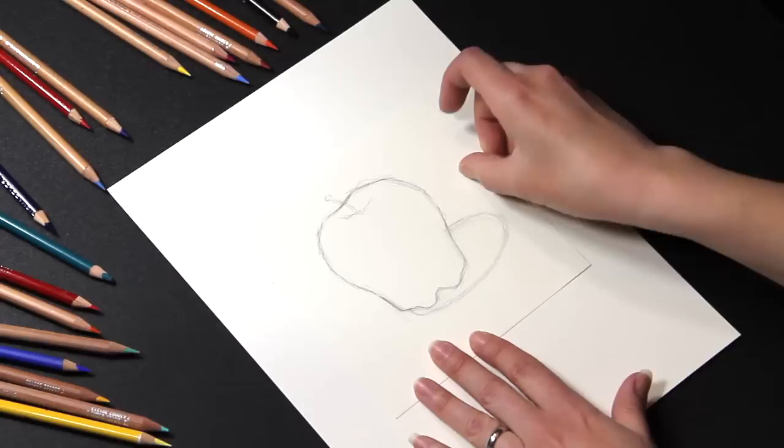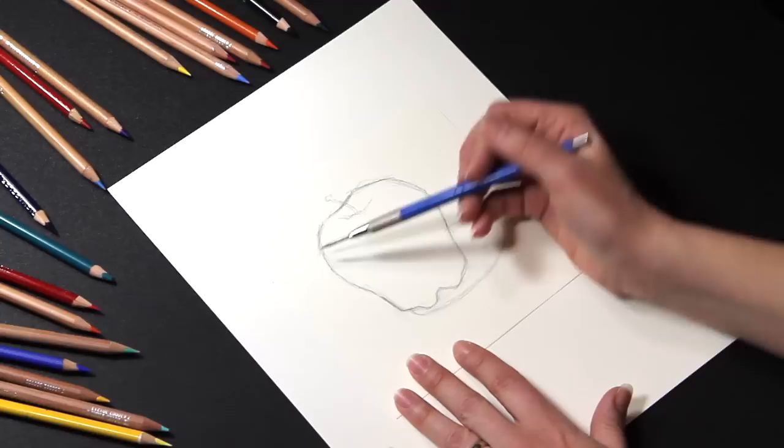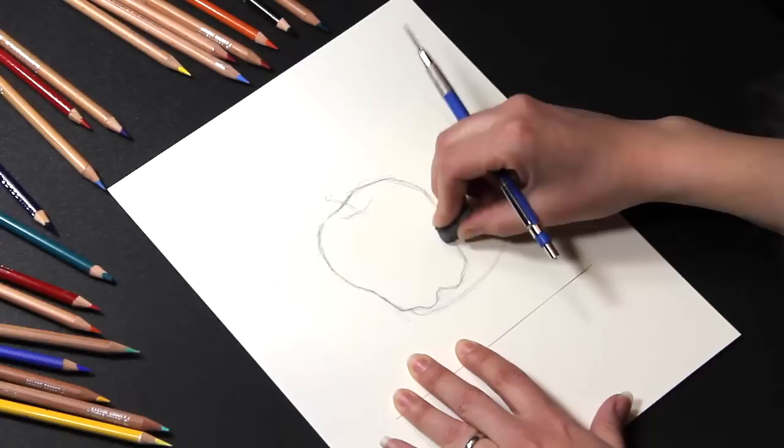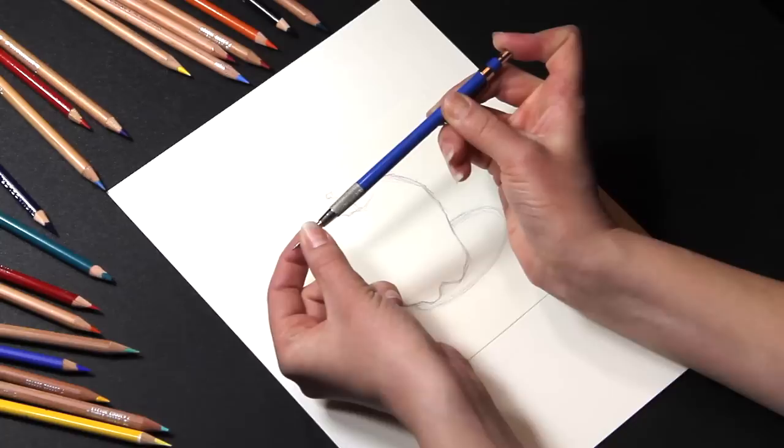When I start a colored pencil piece, I create my initial drawing with a graphite pencil. In this initial drawing, I perfect the shapes and contours of my subject matter. Most artist grade colored pencils do not erase easily, so by working in graphite pencil first, I can erase and change things with ease.